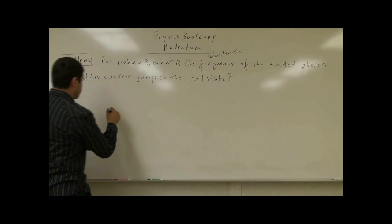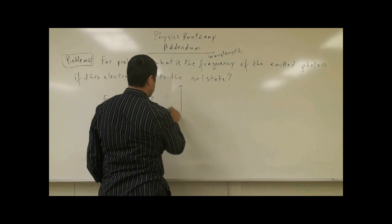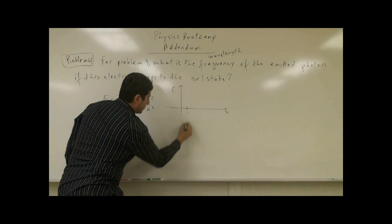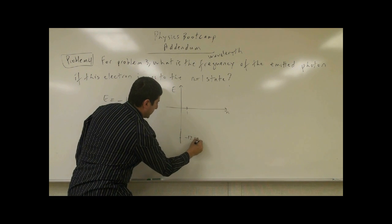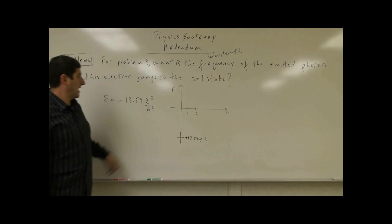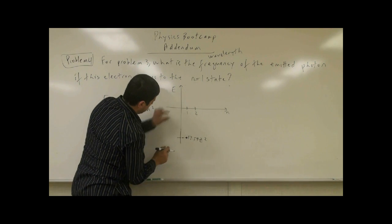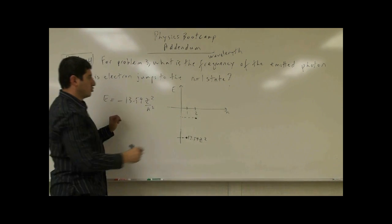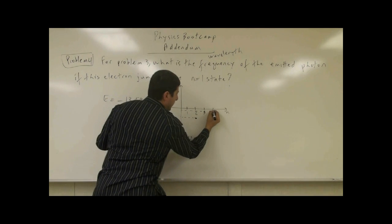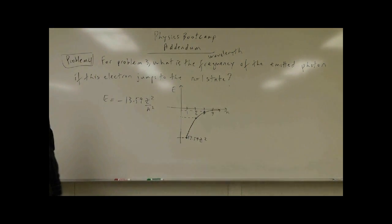Remember, the energy is negative 13.59 Z squared over n squared. We can make a plot of this energy as a function of n. When n equals 1, you start at negative 13.59 Z squared. When n equals 2, the energy is one-fourth of that. When n equals 3, it's one-ninth, and n equals 4 it's one-sixteenth — it's basically plateauing, asymptotically reaching zero.